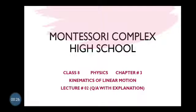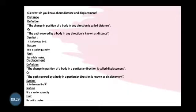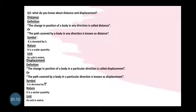Let's talk about question number three of chapter number three: what do you know about distance and displacement? Distance can be defined as the change in position of a body in any direction. If a body moves from one point to another, we call it distance. The interval between two points is called distance. If a body covers any path in any direction, that is called distance.